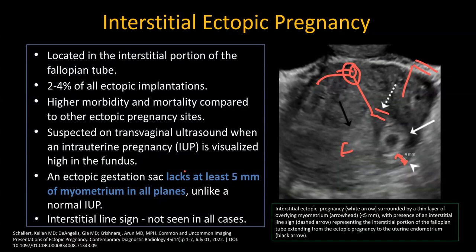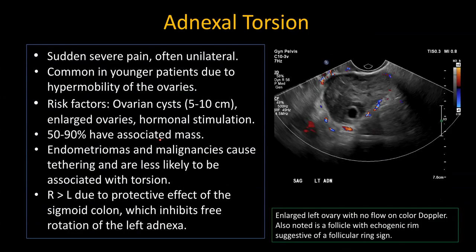The key finding is lack of at least 5 millimeters of myometrium around the sac. Even in confirmed cases, diagnosis can be very challenging. In some cases where there is very little myometrium and the sac is eccentric, the pregnancy can still continue normally. So it's a very challenging diagnosis.